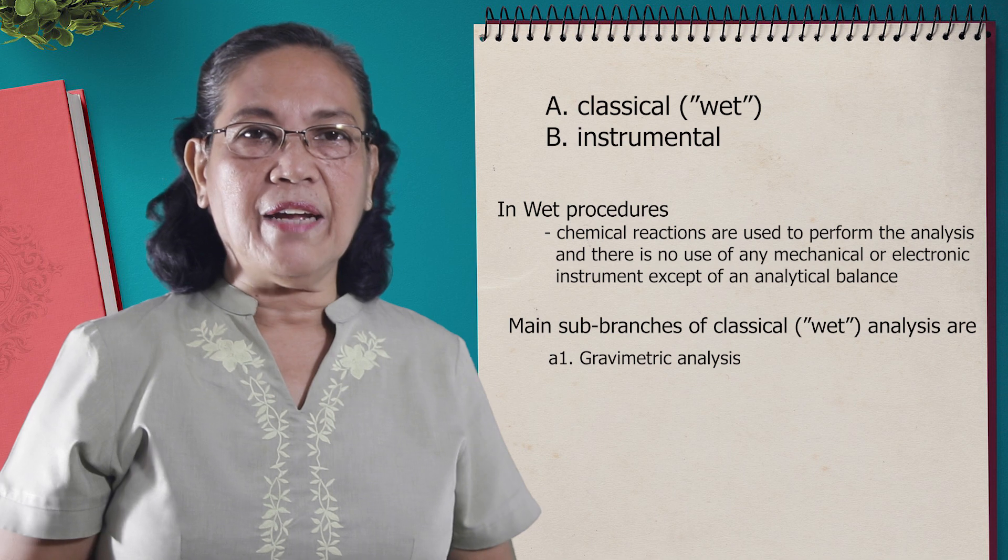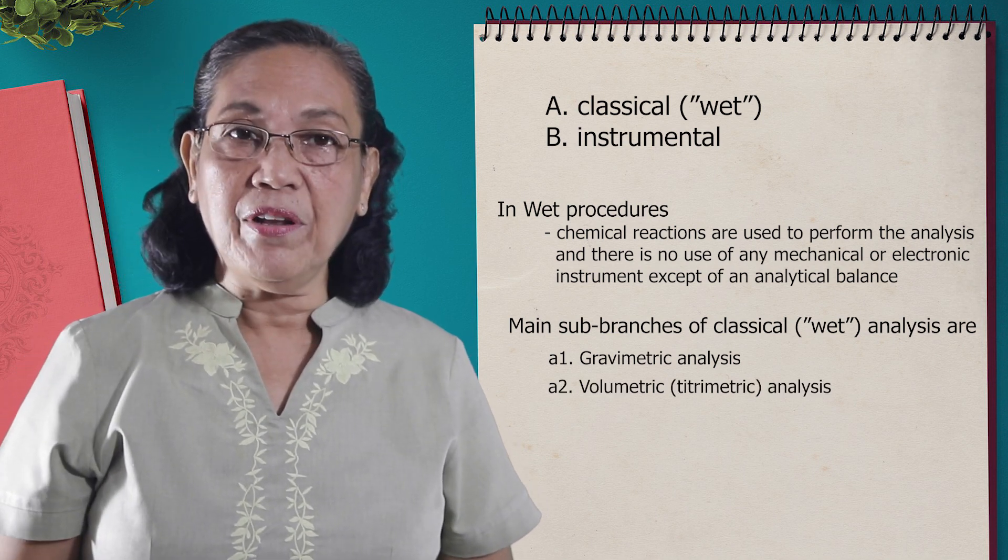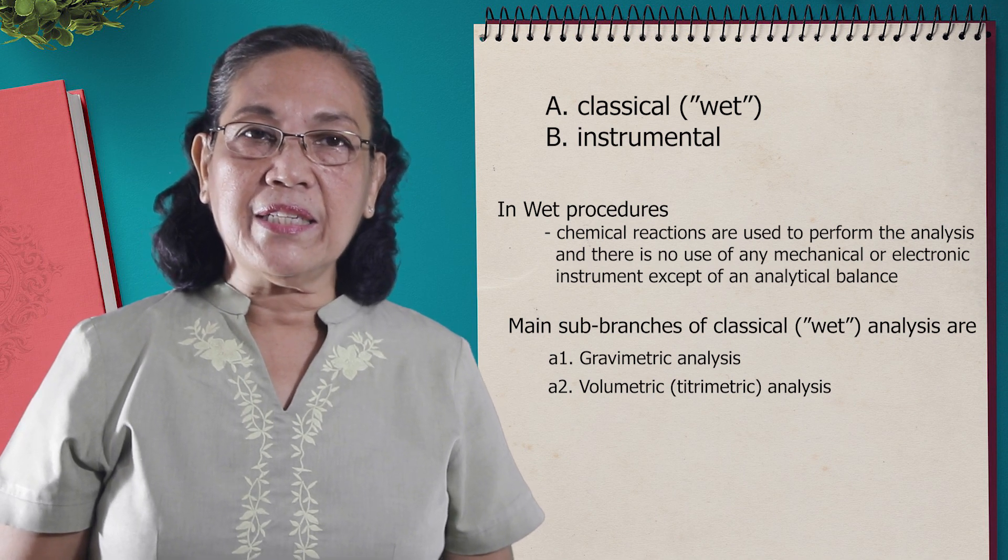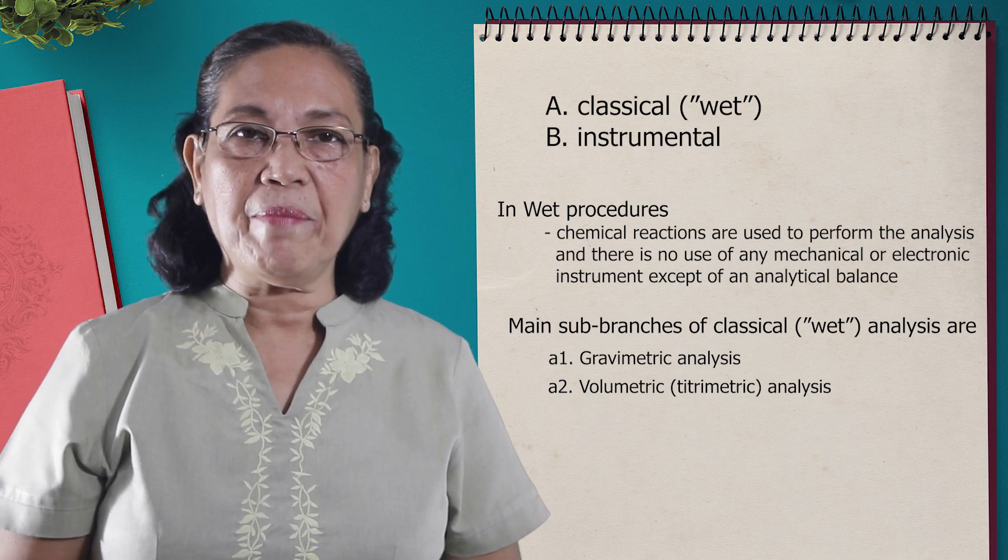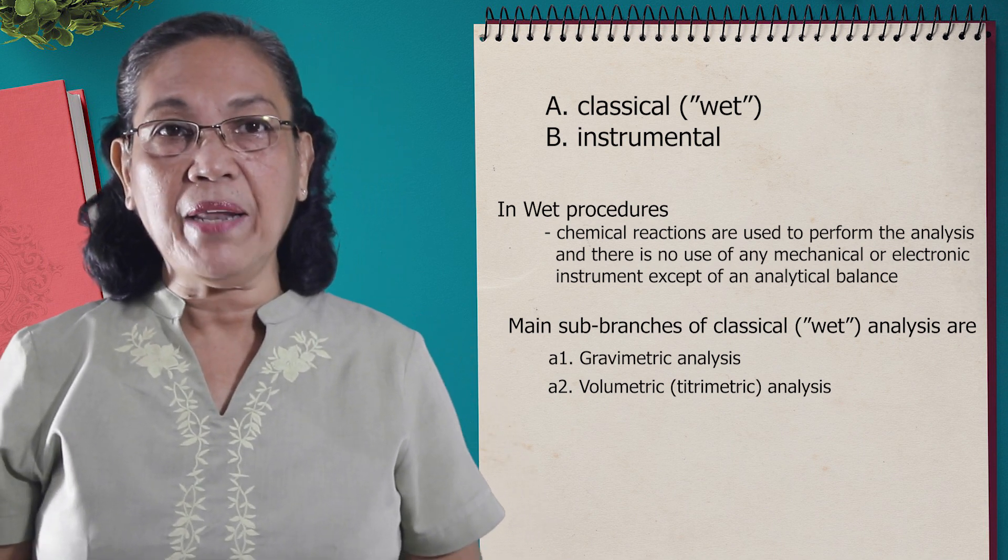The second type of the classical method is the volumetric method. In the volumetric method, this is otherwise known as the titrimetric method. Here is where titration is being applied.